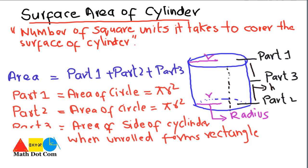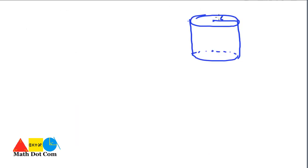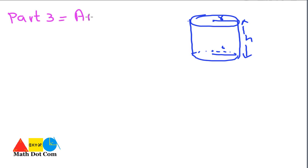So for part 3, we have to consider the area of a rectangle. Part 3 equals the area of a rectangle. The rectangle has a height h. If we start unrolling the cylinder, we get this rectangular shape with height h as one dimension. The height is given, but we need to determine the width of the rectangle.